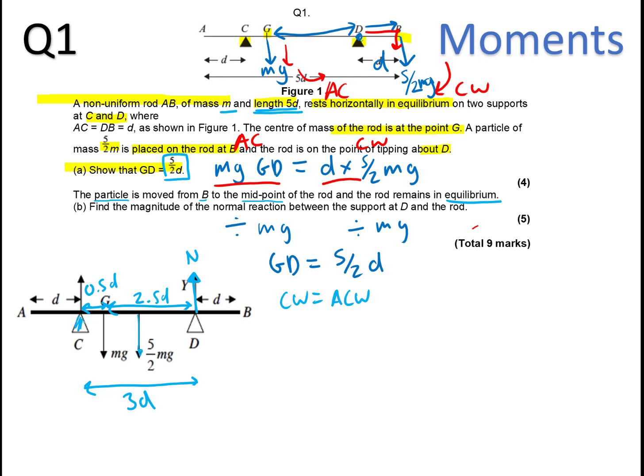So using this information we can take moments about C to help us with D. Let's get the clockwise movements and the anti-clockwise movements. Which one is anti-clockwise? Well, you can see it is the moment from C and a normal reaction, because that will be going anti-clockwise. So that's going to be this length from C, 3DN. Now let's do the clockwise movements, we've got C to G, which is 0.5D. And it's got a weight M, so that must be MG here.